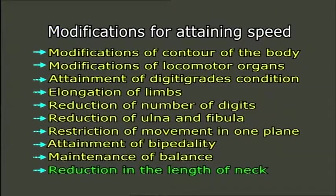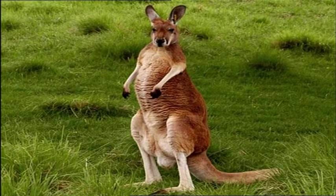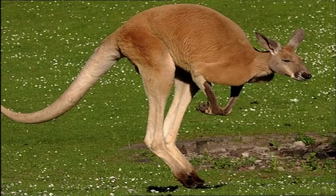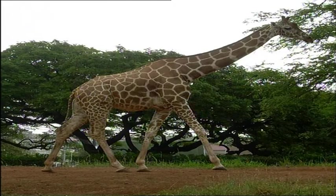Reduction in the length of neck: in bipedal animals there is always a tendency towards the shortening of the neck to bring the head near to the shoulder. Modifications for food getting: the lengthening of the limbs in cursorial animals takes the head sufficiently away from the ground, so to get food and drink, the neck and the skull become elongated.